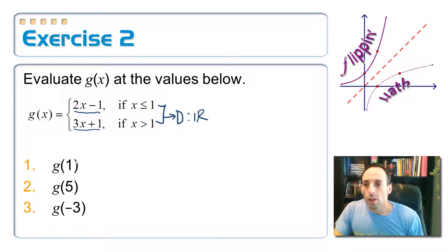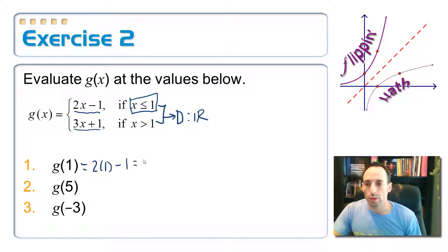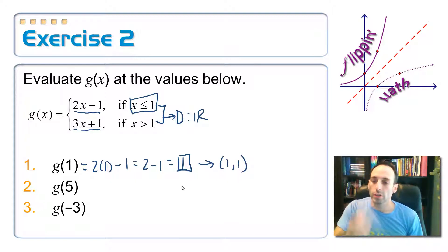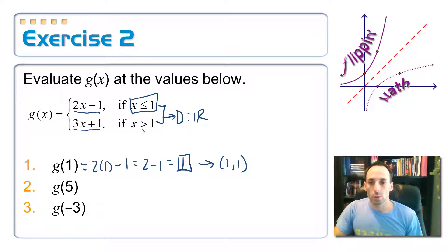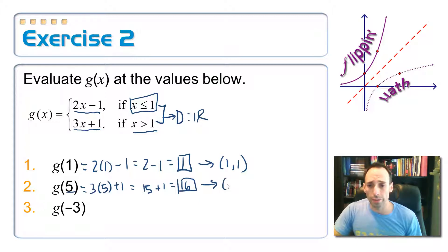If I look at the domain, the part that corresponds to x equals one is x less than or equal to one. So I'm going to stick this into the top equation: two times one minus one gives me two minus one, which is just equal to one. So on the graph, that is the point (1, 1). Now let's look at g(5). Again, I only stick it into one part. Five is greater than one, so I'm going to stick that into the bottom equation: three times five plus one gives me fifteen plus one, which is sixteen. This corresponds to the point (5, 16).